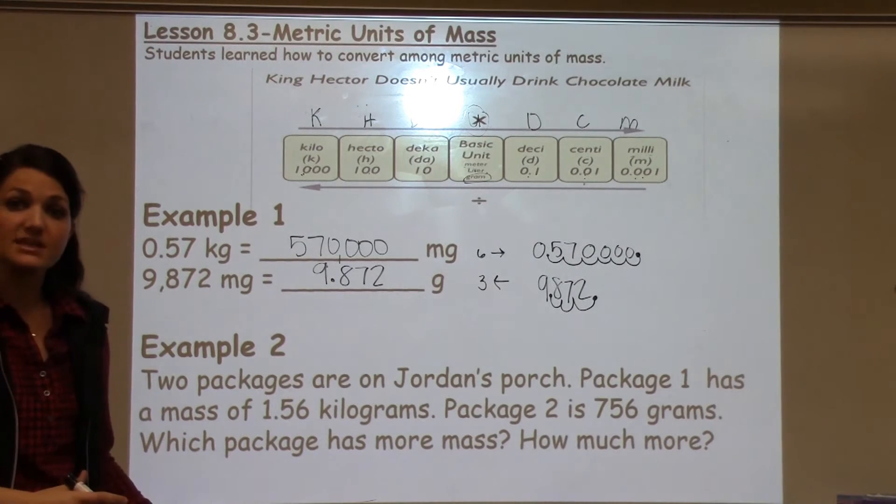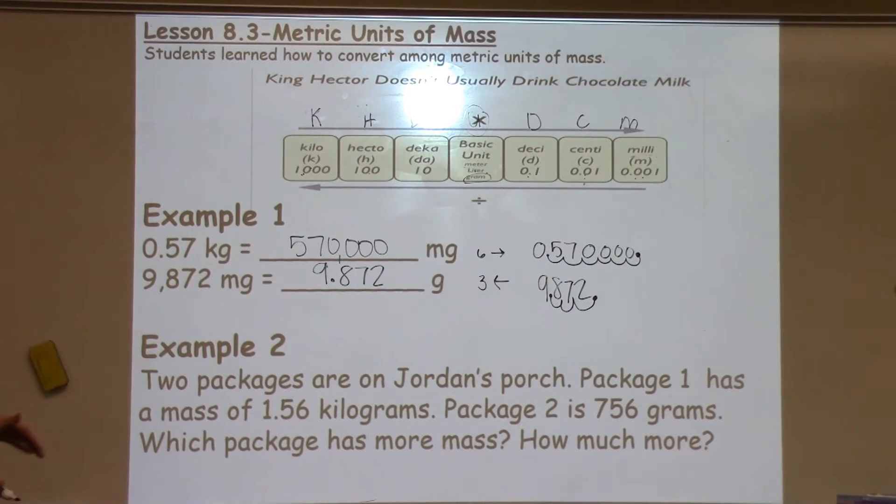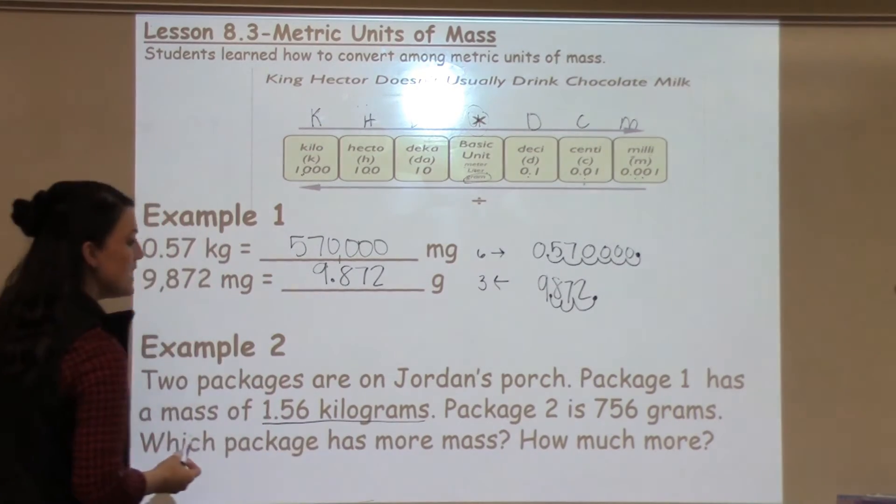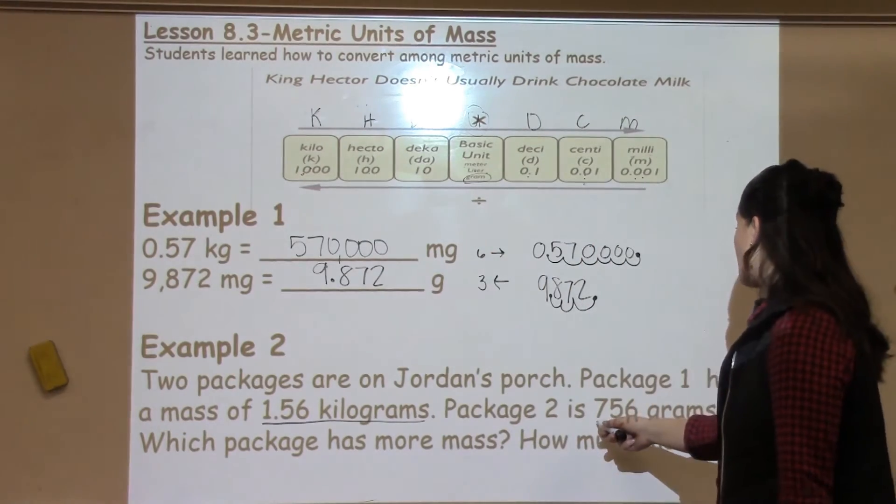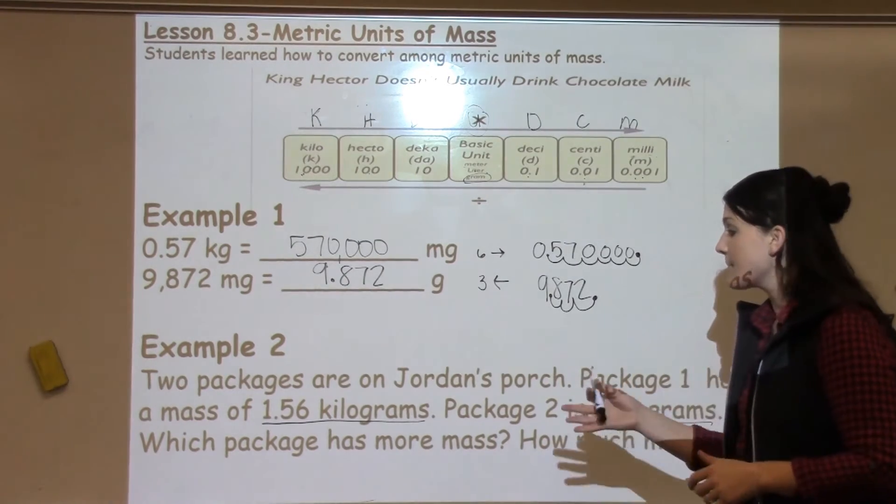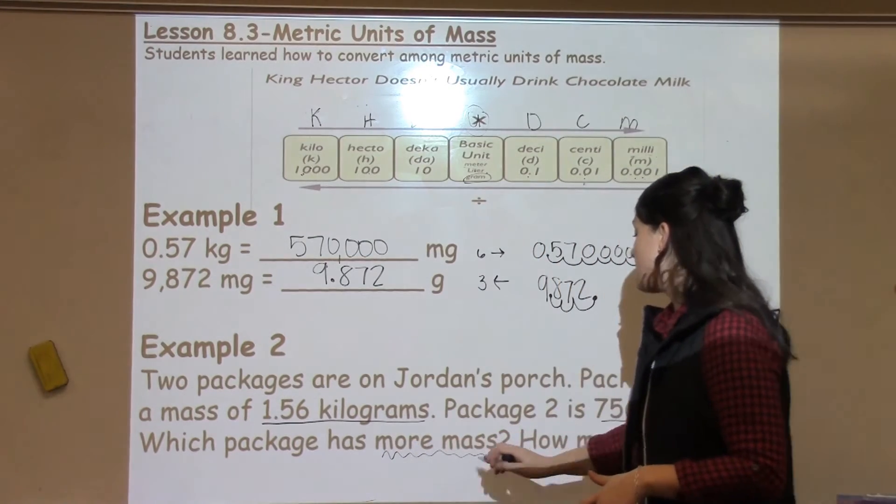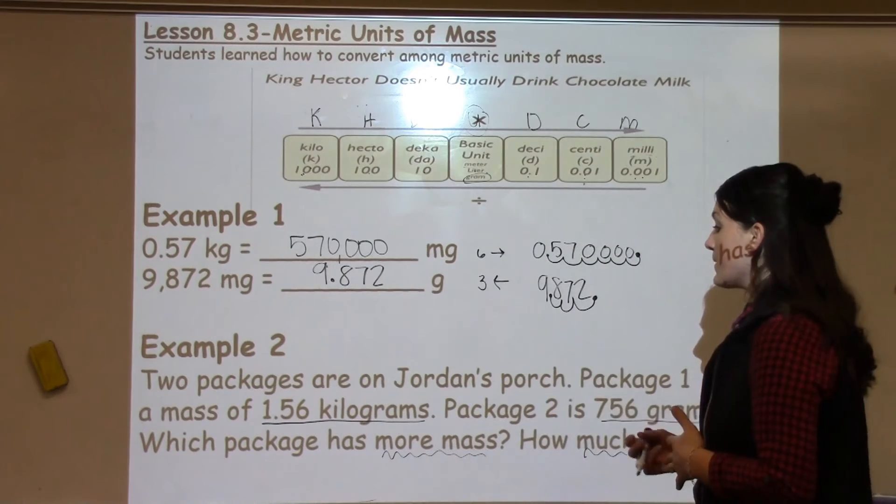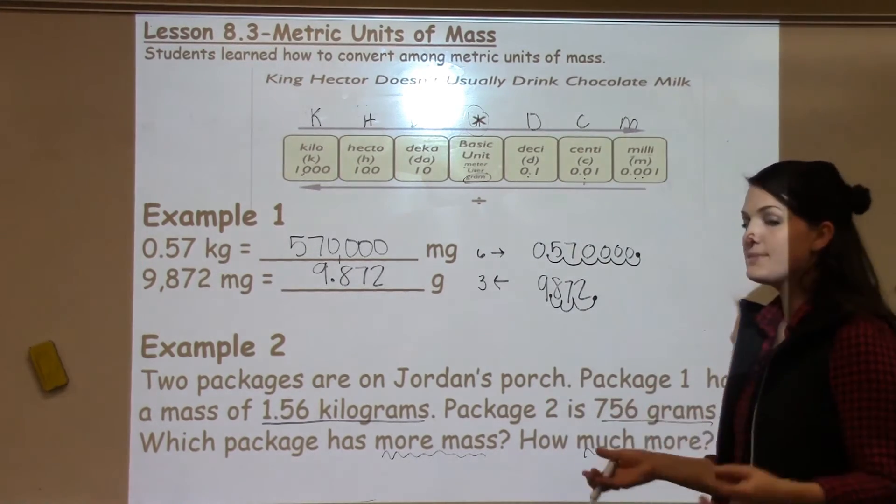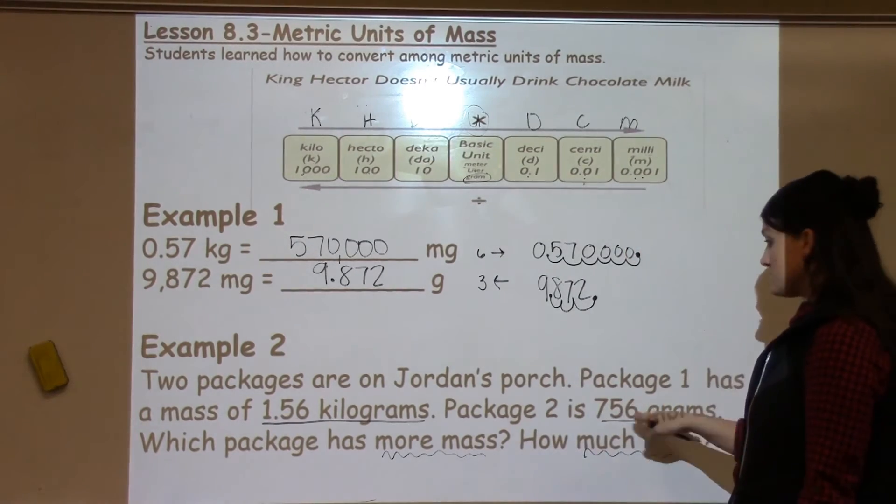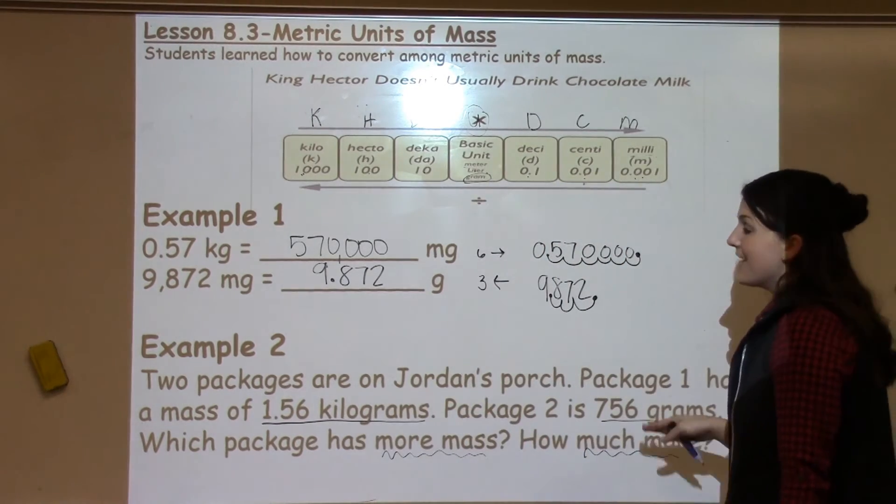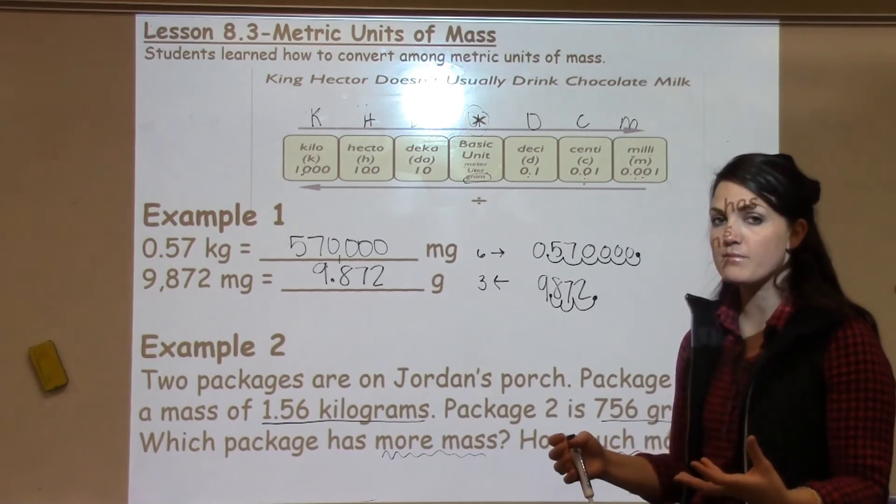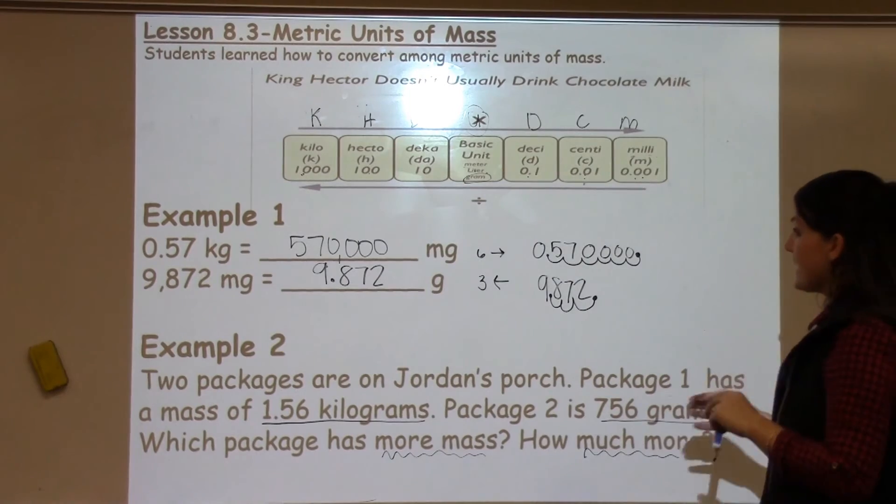So then when students got some practice with just basic conversions, they then applied that knowledge to word problems. So let's take a look at that in example two. It says two packages are on Jordan's porch. Package one has a mass of 1.56 kilograms. Package two is 756 grams. Which package has more mass? How much more? Okay, so I know that I'm going to have to compare these two because it's asking me which one has more mass and how much more does it have. So in order to compare units of measure, they have to be in the same unit. I can't compare kilograms with grams. It makes it very difficult to do that. So I have to make them the same thing.